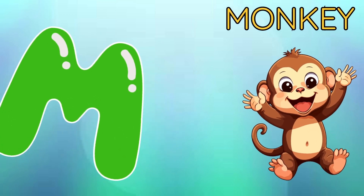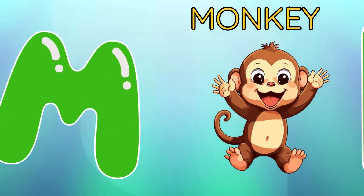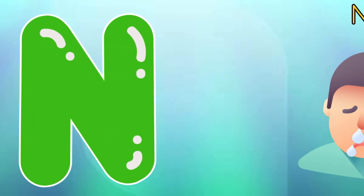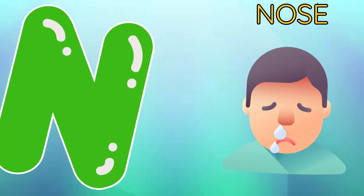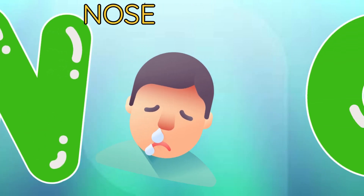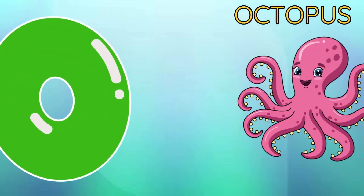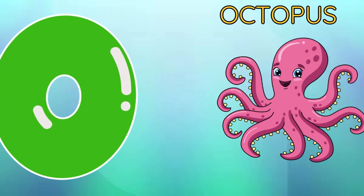M is for monkey, m-m-monkey. N is for nose, m-m-nose. O is for octopus,